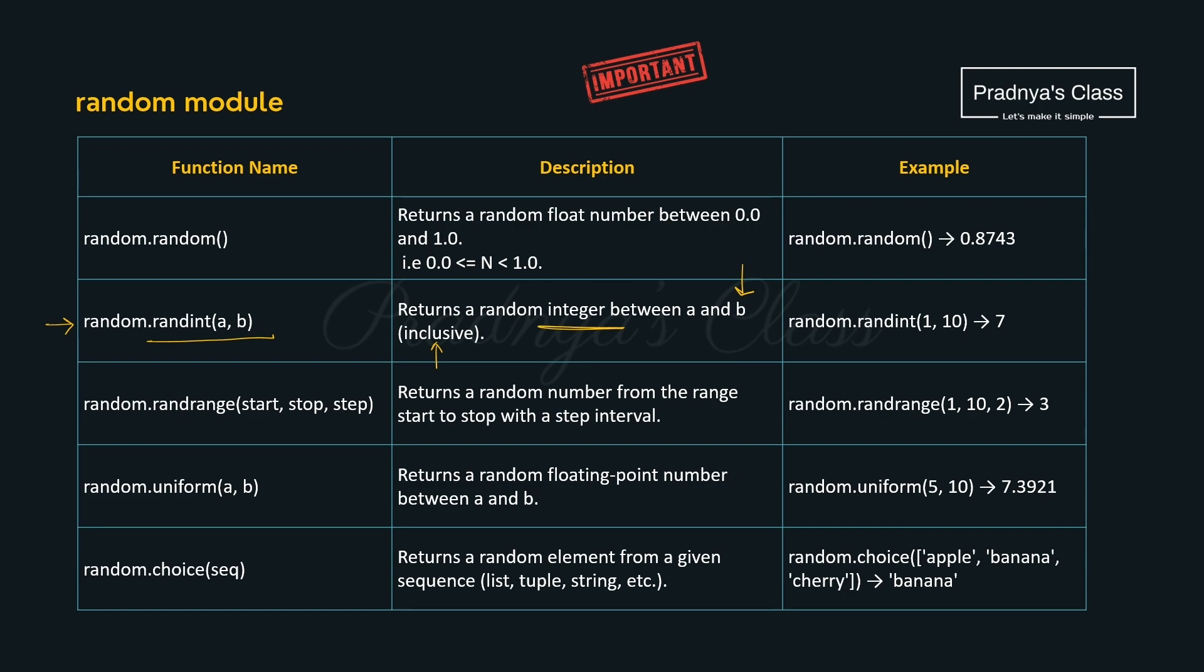If you want to generate integer random number using step, then you can use randrange. Here you can provide the step value. Based on the step value the numbers will get incremented. Look at the example. Here the step value is 2. It means the possible values will be 1, 3, 5, 7 and 9. Out of these you may get any one.